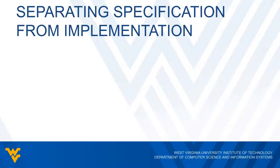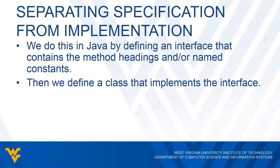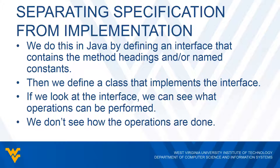So how do we actually go about separating the what from the how? In Java, we create an interface that contains only the method headings or named constants. The interface contains the what portion, and then we create another class that implements the interface. Looking at the interface, we can see what operations can be performed, but not how they're done. We only see that in the class that implements the interface. We're not concerned with how things are being implemented — we only want to call the appropriate methods from the interface and let the class take care of the details.